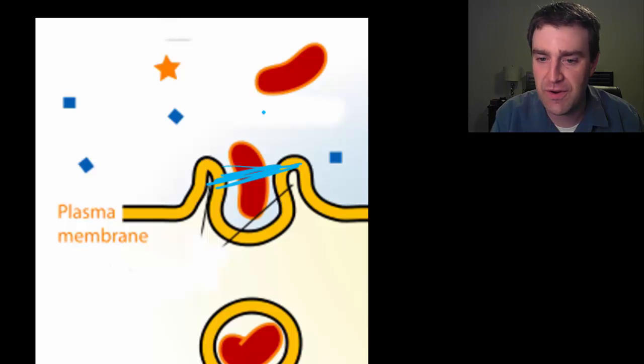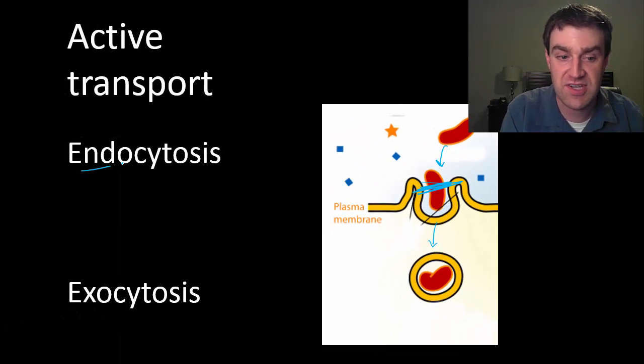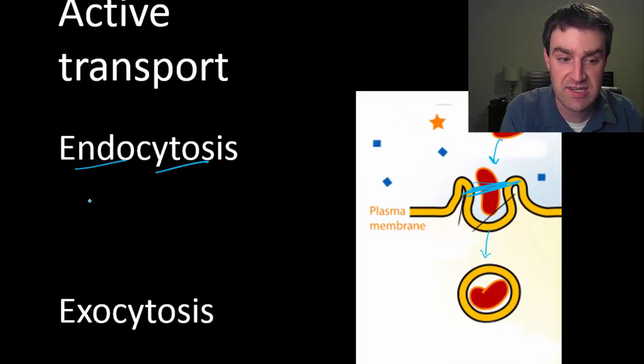So this little picture here, if we were to imagine it going this way, this would be like a particle entering the cell. If a very large particle enters the cell, then it would be endocytosis.